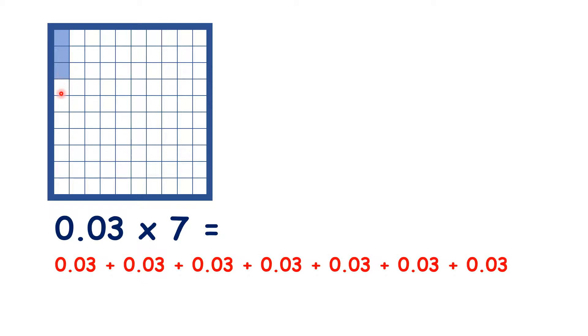then we can multiply that by 2, 3, 4, 5, 6, and 7, and now we have twenty-one hundredths, or 0.21 as our total.